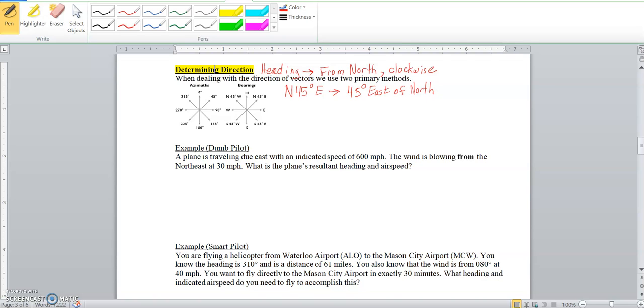N 45 E is saying that 45 east of north. So you start at north. Remember headings you always start north. If it says 45 degrees east that means you go to the right 45 degrees. If you were to say there is another way of doing this, that might be say S 20 degrees W.